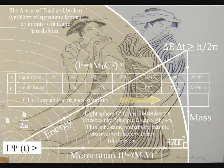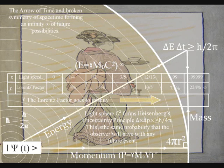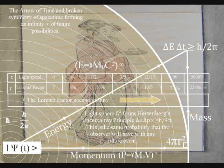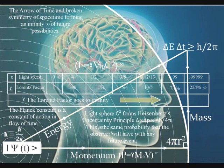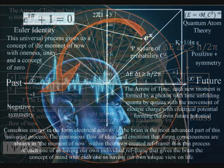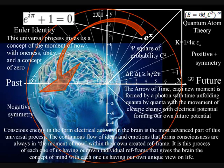Just by walking across the room you will slightly alter your own experience of time and space, and in doing so you will create your own future relative to your own actions, energy, mass, and momentum, forming your own arrow of time within your own created reference frame. Because this process is universal, conscious energy, in the form of electrical activity in the brain, is the most advanced part of this universal process.